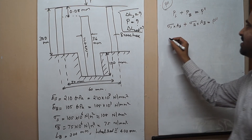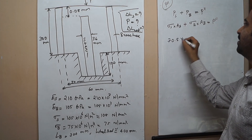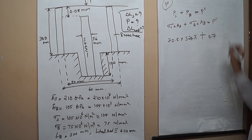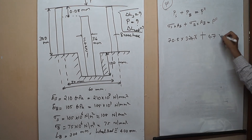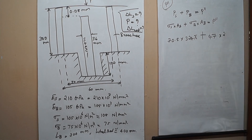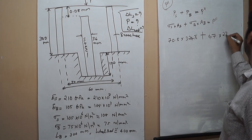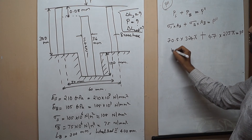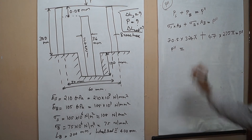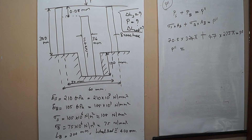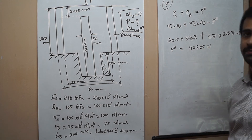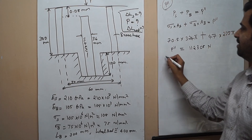The new limiting stress for steel is 70.5 N/mm² and the area of steel is 324π mm². The new limiting stress for brass is 47 N/mm² and the area of brass is 275π mm². So P2' = (70.5 × 324π) + (47 × 275π) = 112,308 N. Therefore, the total load P = P' + P2' = 24,178 + 112,308 = 136.4 kN.